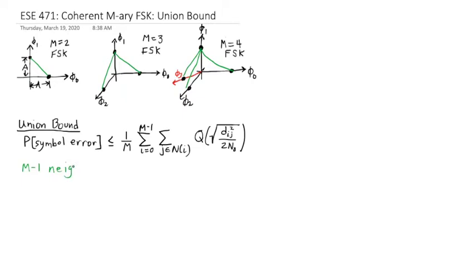And the next thing is, what are the distance to those neighbors? What is the distance to those neighbors? Well, you can see it here in M equals three FSK. These distances are identical.